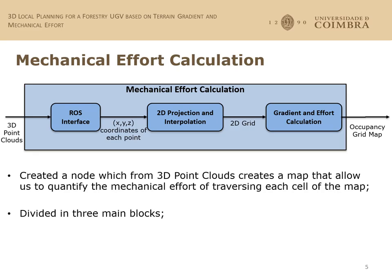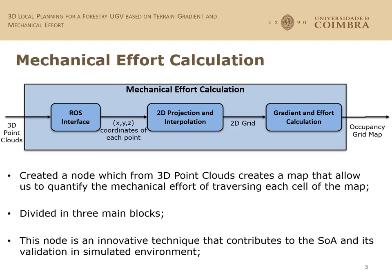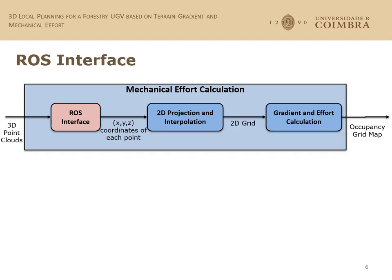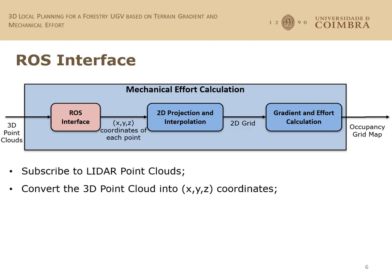This node is divided into three main blocks: the ROS interface, where we subscribe to the sensor data; the 2D projection and interpolation, where we project the 3D data from sensors into a 2D grid; and the third block, the gradient and effort calculation, where we calculate the gradient and the effort of each cell of the grid.